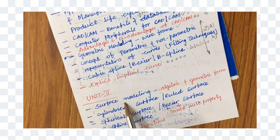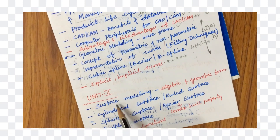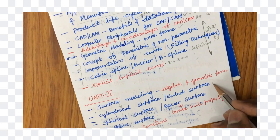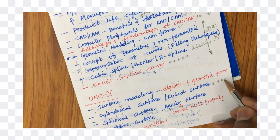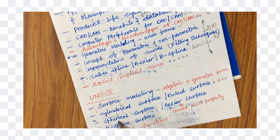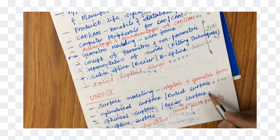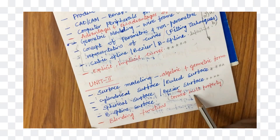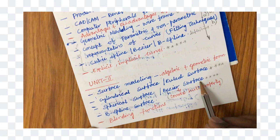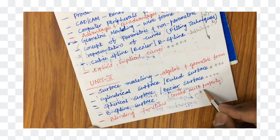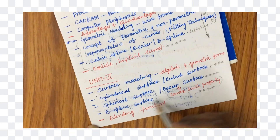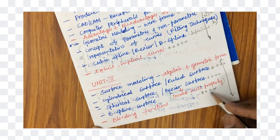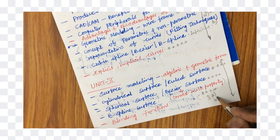In surface modeling, cylindrical surface or ruled surface may be one of the important questions asked several times, or spherical surface or the Bezier surface. When working out the Bezier surface, the convex hull property of the Bezier surface is a very important gunshot question. The blending functions from these topics may appear as question 3A and 3B.